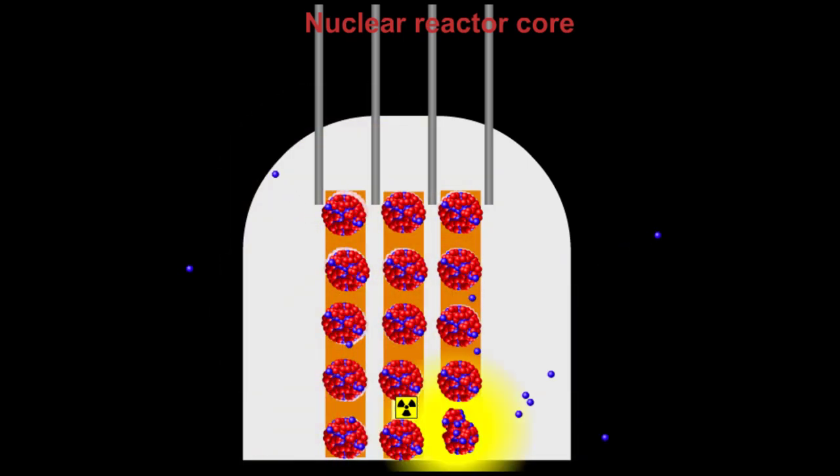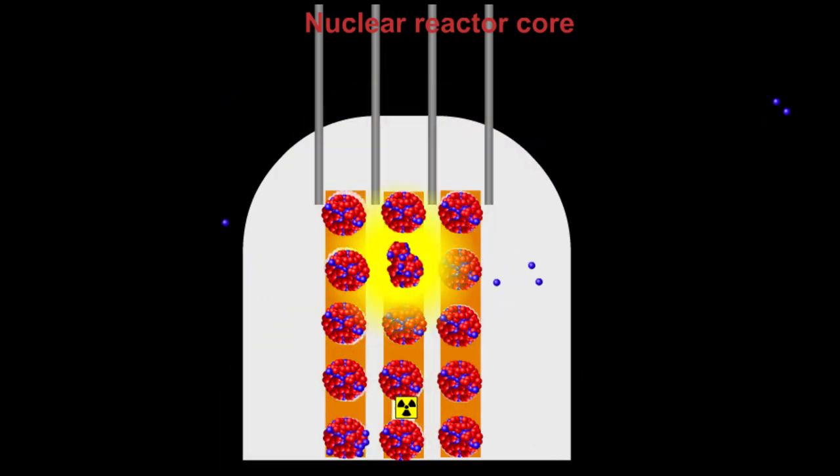We've shown the nuclei reforming after they fission, which obviously they don't do, but it keeps the simulation tidy. Just imagine that each time they reform we're focusing on a different nucleus. We've also simplified it by not showing the moderator.